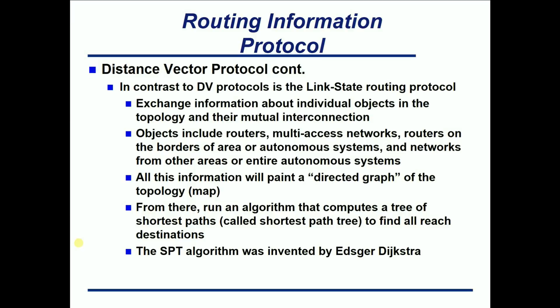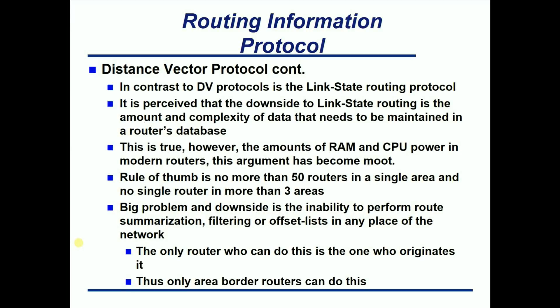Everything that OSPF knows — routers, routers at the borders of an area, or borders of an autonomous system — once they have this graph, they build a shortest path tree from it. It is perceived that the downside to link state routing is the amount of complexity of data that needs to be maintained in the router's database. Using a link state routing protocol uses lots of RAM and CPU power, but in today's technology that's almost a moot point. Cisco says as a rule of thumb: have no more than 50 routers in a single area, and no single router should be in more than three areas.